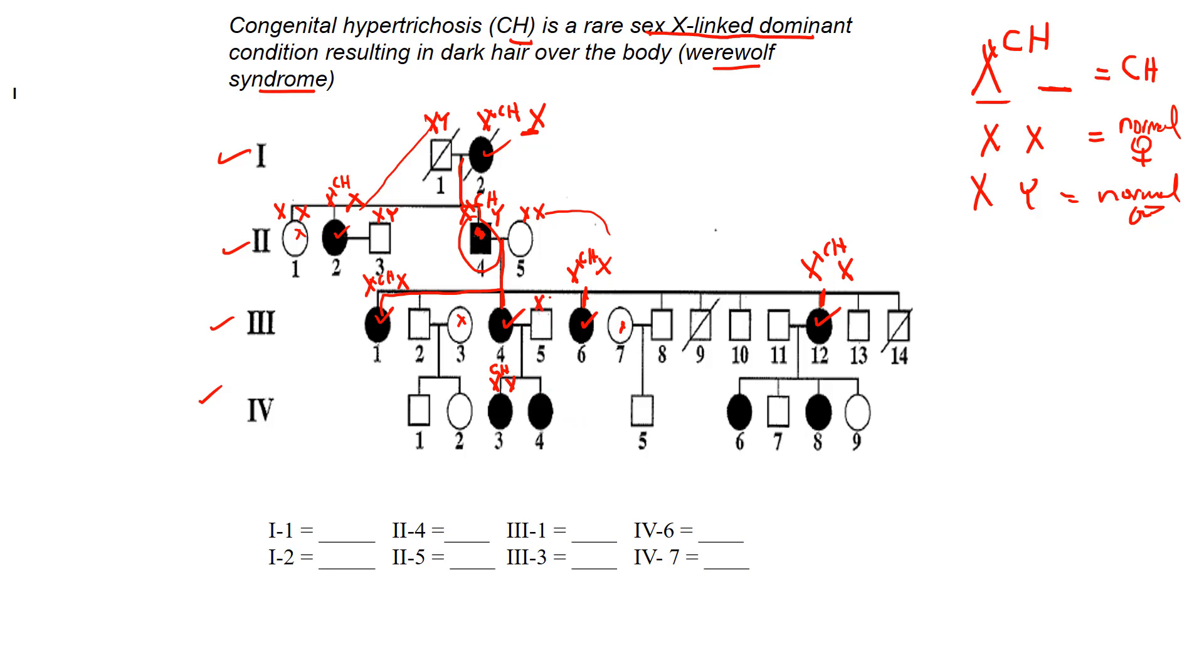And the other one has to be an X. Why? Because look at dad up here. Dad was just XY. He's unaffected. What did he give that daughter? He gave her the normal X chromosome. And same with this one. X CH X. So hopefully you get the drift there. Same with that. Look at this guy. He's unaffected. That's what he's giving these females. But they're affected.